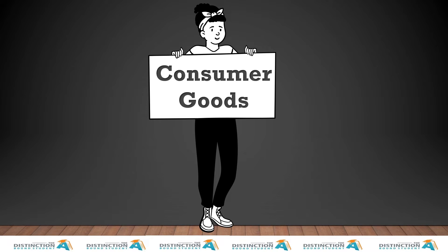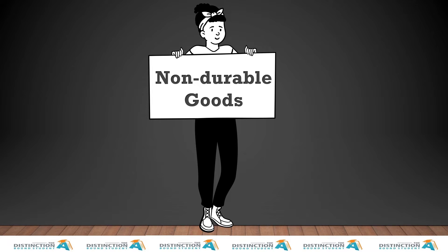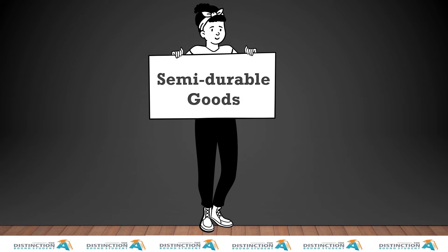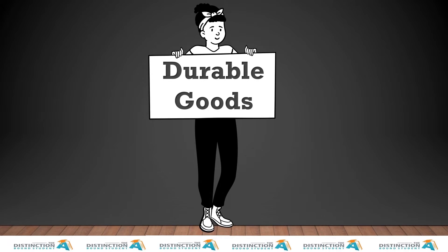Consumer goods are goods that are purchased for consumption by consumers to satisfy their needs and wants. Capital goods are goods that are not purchased for their own sake but to produce other goods. Non-durable goods are goods that cannot be reused. Semi-durable goods are goods that only last for a short period of time but can be used more than once. Durable goods are goods that can last for more than a year because they do not wear out easily.